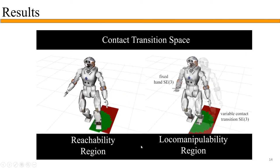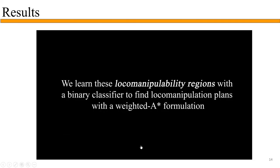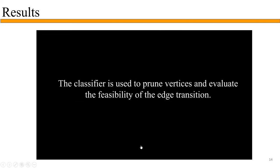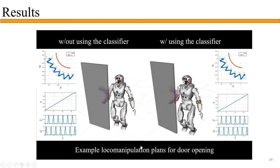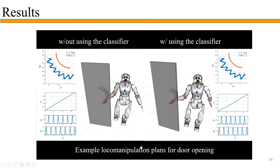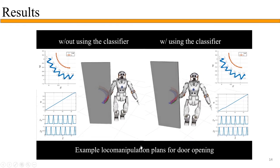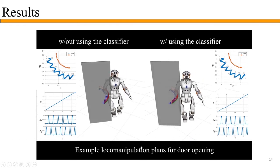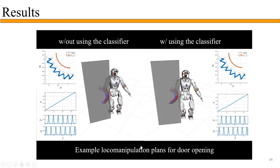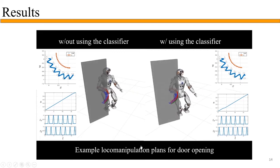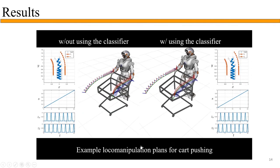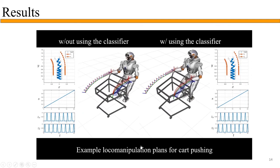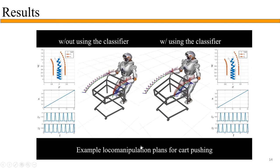Here are some results. We learn the local manipulation region with a classifier and use it to prune vertices and evaluate edge transition feasibility. This is Valkyrie opening a door with a local manipulation trajectory. We can also add multiple end-effector constraints with this formulation — this is Valkyrie performing a two-handed cart push.